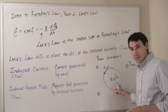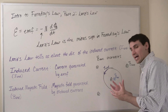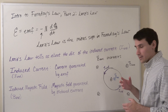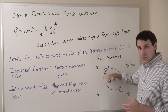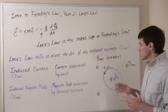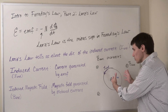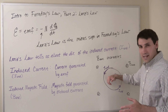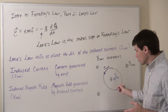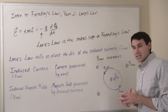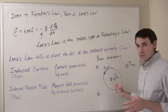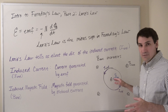The induced current will also generate an induced magnetic field. Here we have current moving around a wire that is going to create its own magnetic field. We can use the right-hand rule for a magnetic field of a loop: if my fingers curl in the direction of the current, my thumb points in the direction of the magnetic field, which is out of the page. So a magnetic field increasing into the board generates an induced current in the counterclockwise direction and an induced magnetic field pointing out of the page. Our goal is to develop guidelines to figure out the direction of this induced current and induced magnetic field.